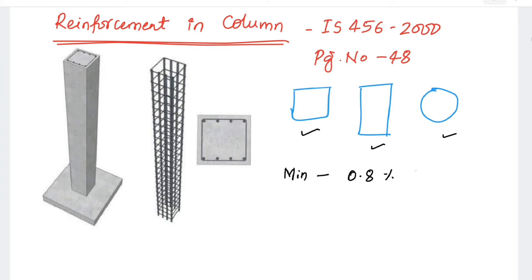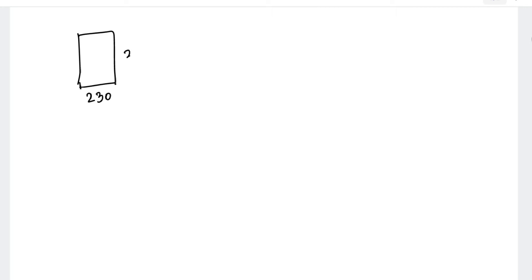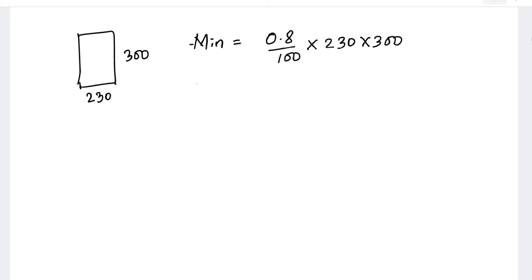When it comes to the percentage of reinforcement, the minimum percentage to be used in a column is 0.8 percent of the cross-section, and the maximum percentage is 6 percent of the total cross-section of the column. For example, if the size of the column is 230 by 300 mm, the minimum reinforcement is 0.8 percent of 230 × 300, and the maximum is 6 percent of 230 × 300.